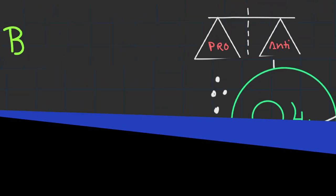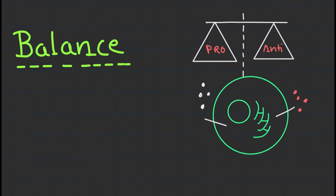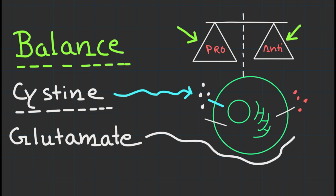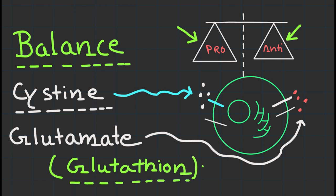The delicate balance between pro-oxidant and antioxidant molecules tightly controls the occurrence of ferroptosis. For example, the cysteine-glutamate antiporter system plays a crucial role and imports cysteine into the cell in exchange for glutamate, which is essential for the synthesis of glutathione. Glutathione is an antioxidant that helps counteract the lipid peroxidation process.